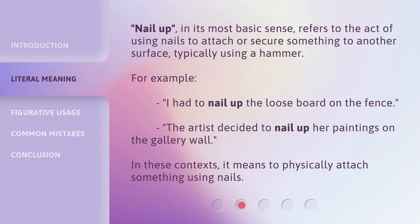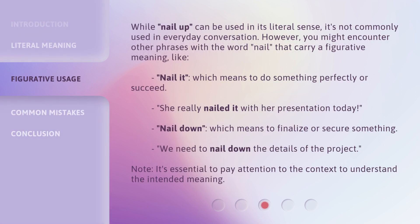While 'nail up' can be used in its literal sense, it's not commonly used in everyday conversation. However, you might encounter other phrases with the word 'nail' that carry a figurative meaning — like 'nail it,' which means to do something perfectly or succeed: 'She really nailed it with her presentation today.' 'Nail down' means to finalize or secure something: 'We need to nail down the details of the project.' It's essential to pay attention to context to understand the intended meaning.